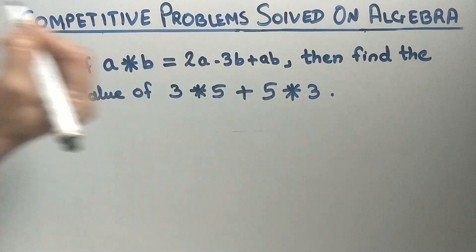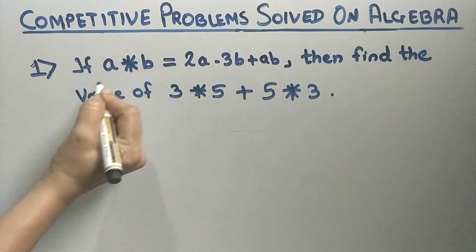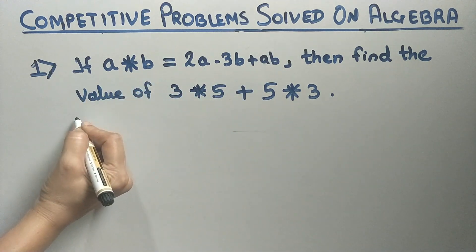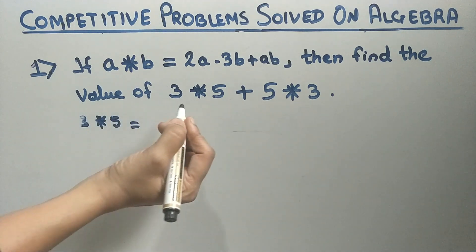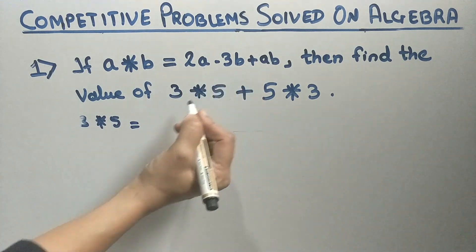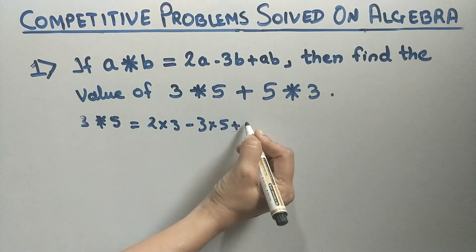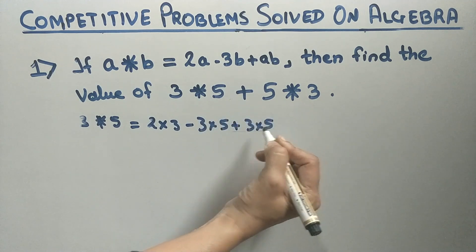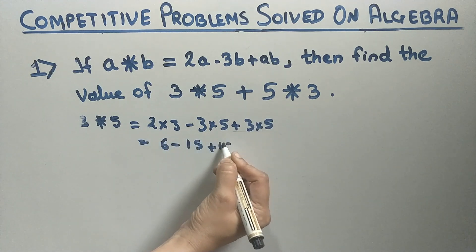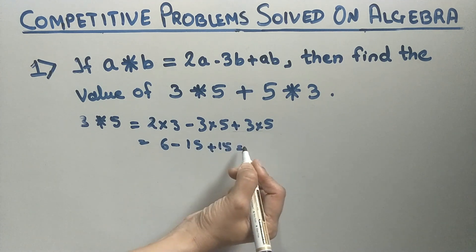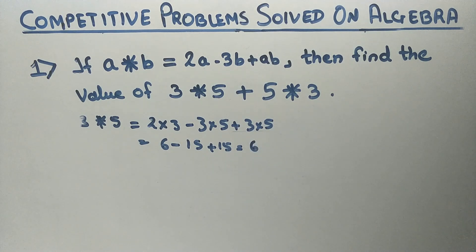First example: if a⊙b = 2a - 3b + ab, then we have to find the value of 3⊙5 + 5⊙3. For 3⊙5, we substitute a = 3 and b = 5: so 2×3 - 3×5 + 3×5, which gives 6 - 15 + 15. The -15 and +15 cancel each other, so 3⊙5 = 6.